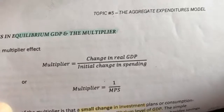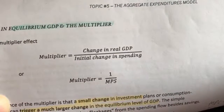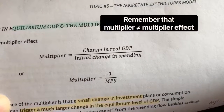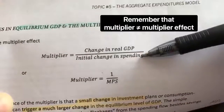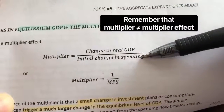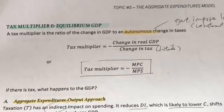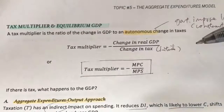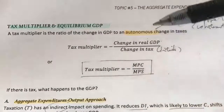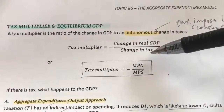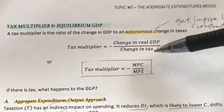Before that, let's do a little bit of revision. The multiplier is basically a change in real GDP given that there's an initial change in spending. Now let's take a look at the tax multiplier, which is the ratio of a change in real GDP to an autonomous or lump sum change in tax.